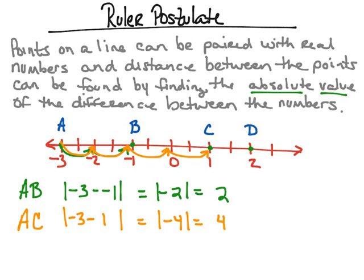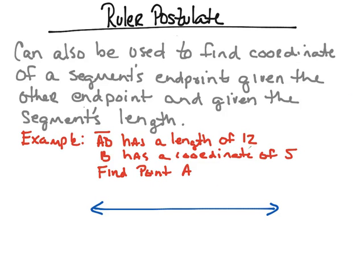This is called the ruler postulate. We can also use this ruler postulate to find the coordinate of a segment's endpoint given the other endpoint and the segment's length.